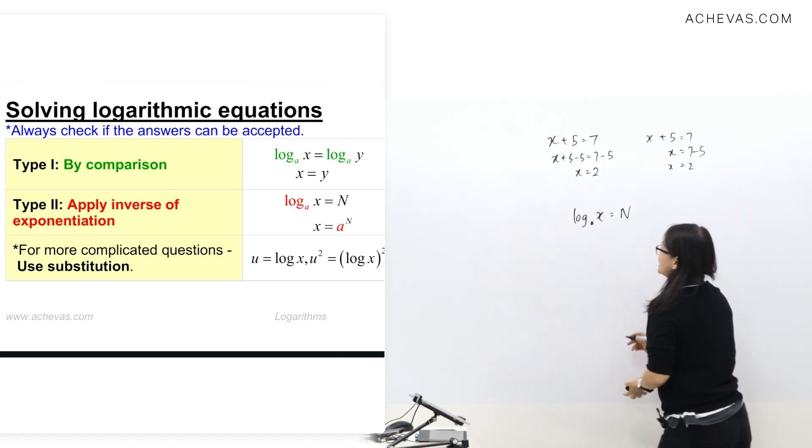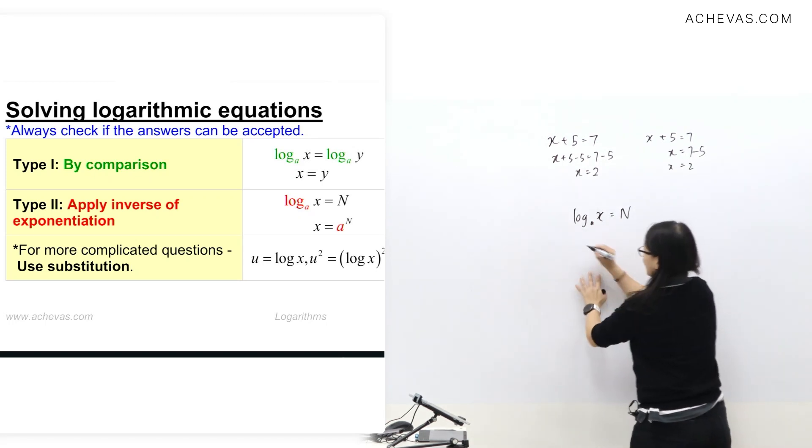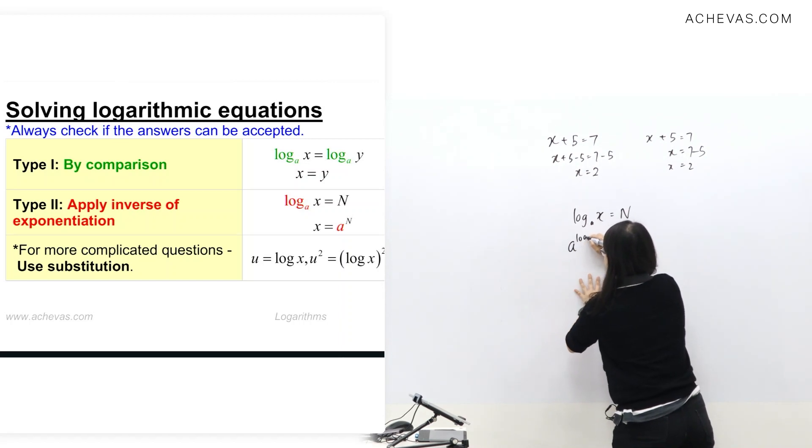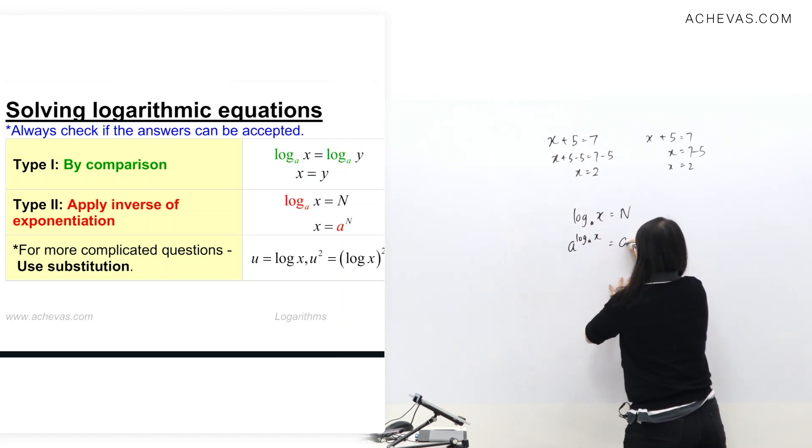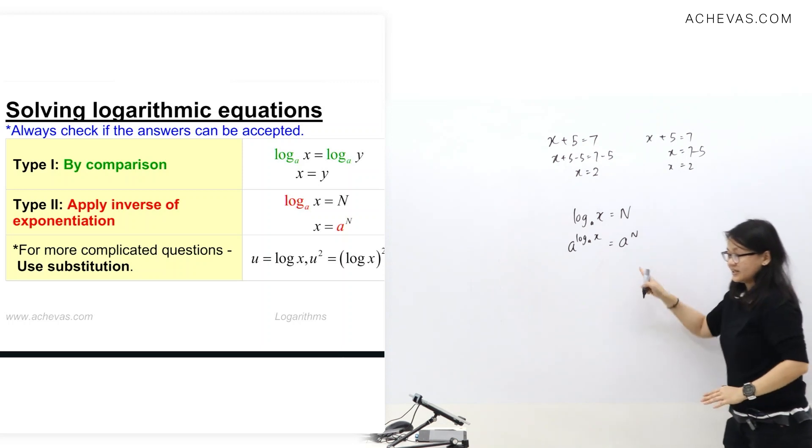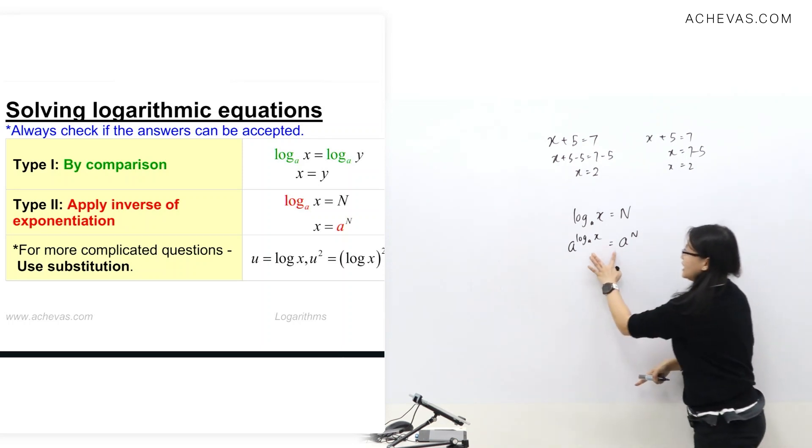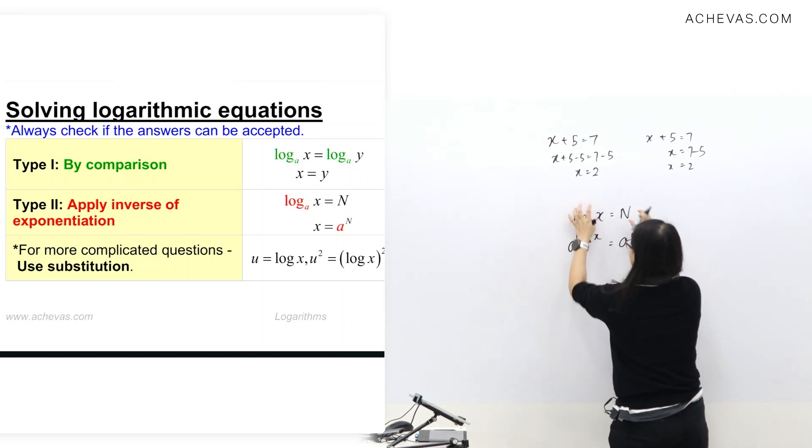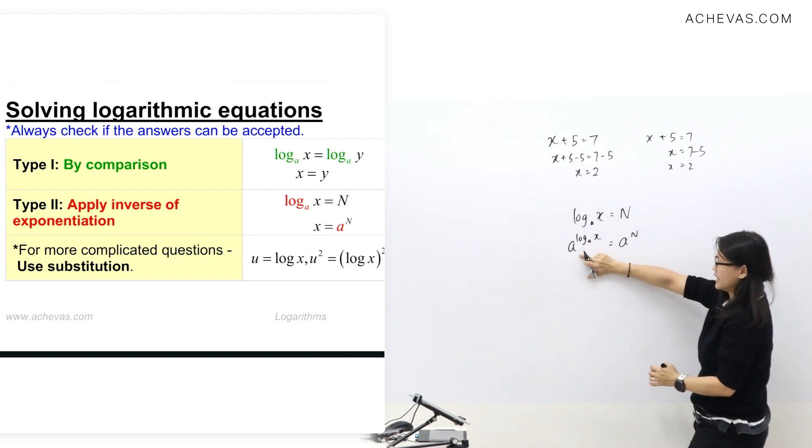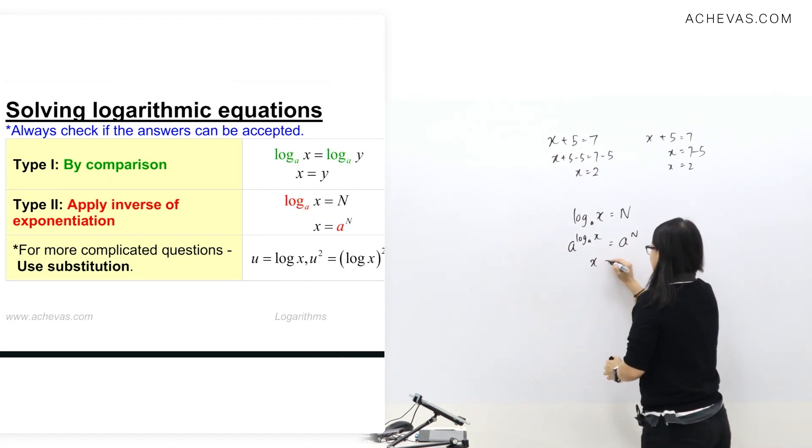What's the slow way? The slow way is, we learn today to cancel log_A. I write base A and raise to this. And I write base A and raise to this, right? I learn today, I take exponential to make this one. Then they cancel. I write x equals to A power n.